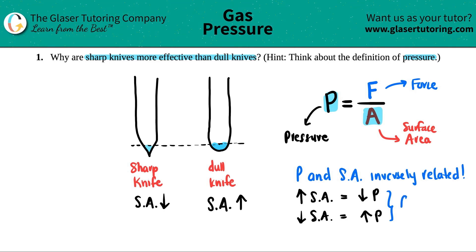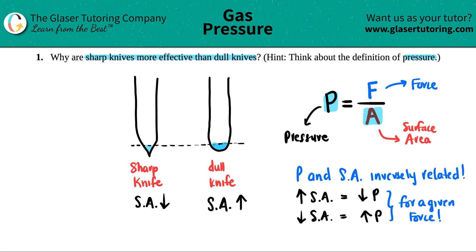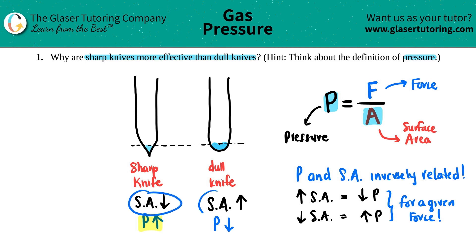For a given force — keeping force constant — if I apply the same force to both knives, the dull knife has higher surface area, so the pressure it puts out is much lower. The sharp knife has lower surface area, so the pressure is higher. That's why you can cut through things more effectively with a sharp knife — because surface area and pressure are inversely related. Hopefully this helped! Subscribe to the channel and let's keep going with the gas chapter.